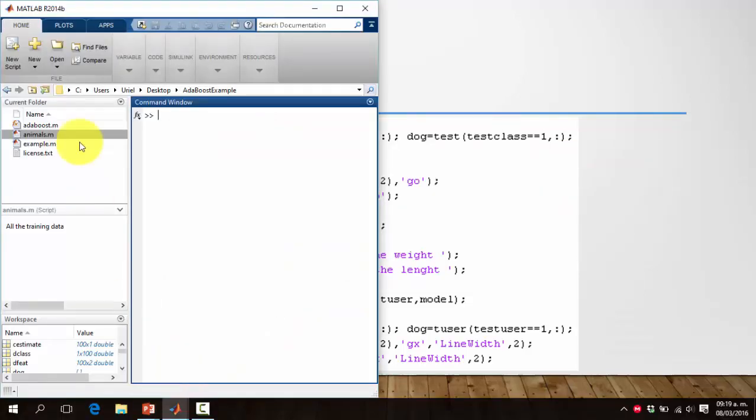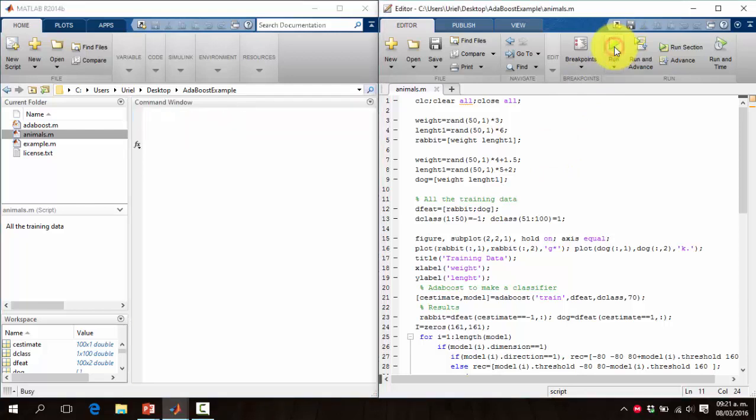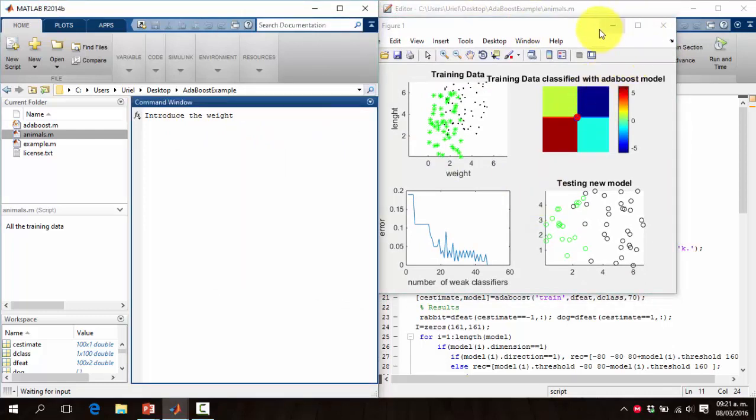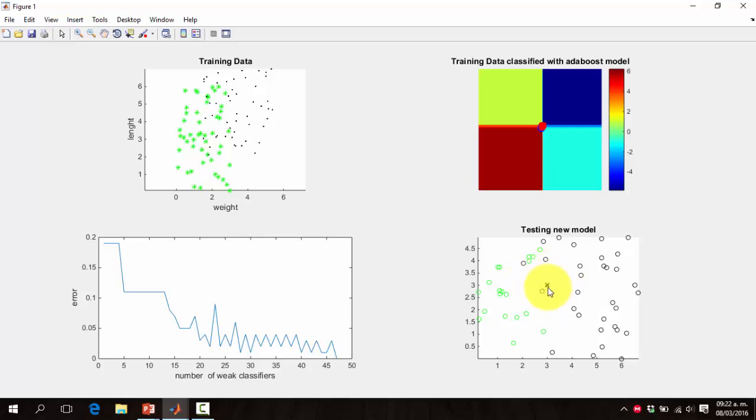Let's go to MATLAB. We're here in MATLAB and we're gonna run the program. And then we can introduce the weight and the length of the animal. This is the graph. You can check it here. The green points are the rabbits and the black points are the dogs. This is our training data classified with AdaBoost model. And finally, we will introduce the weight here, maybe three. And the weight, also three on the length. And we can see now here, this is the new indicator for the animal. The color is black and it implies that it's a dog. And we finish this part.